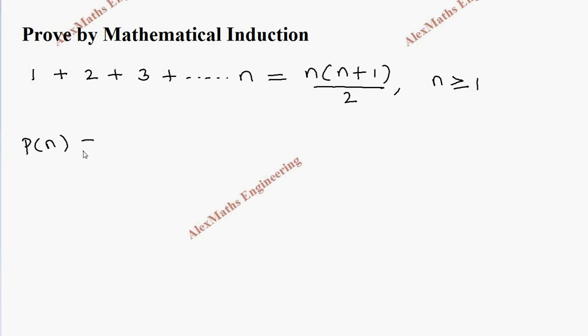P(n) has two parts: on the left-hand side, which is 1 + 2 + 3 + ... + n, and this is equal to the right-hand side, n(n+1)/2.